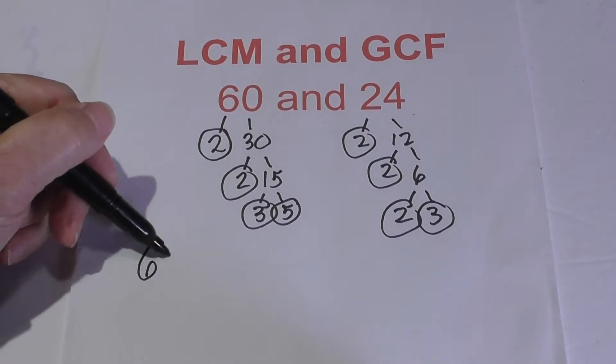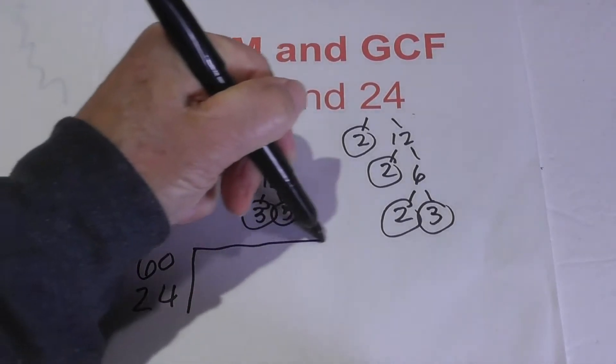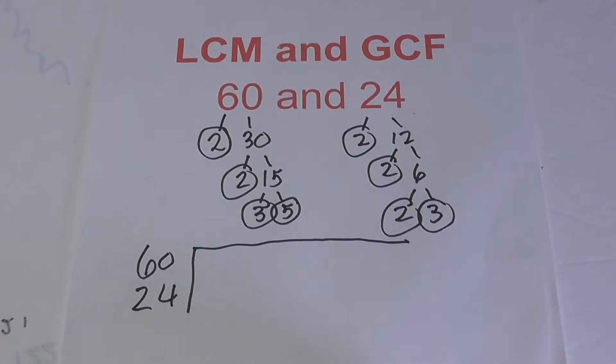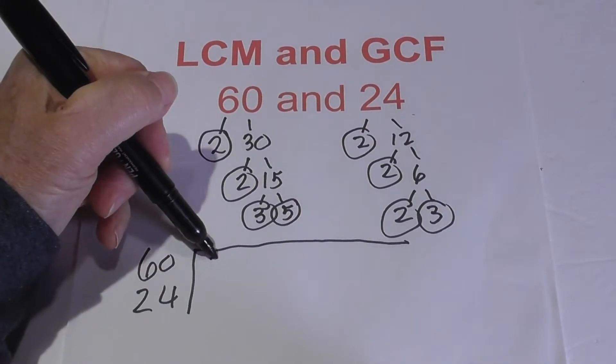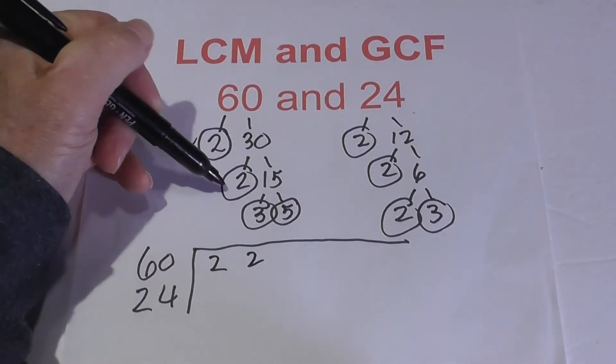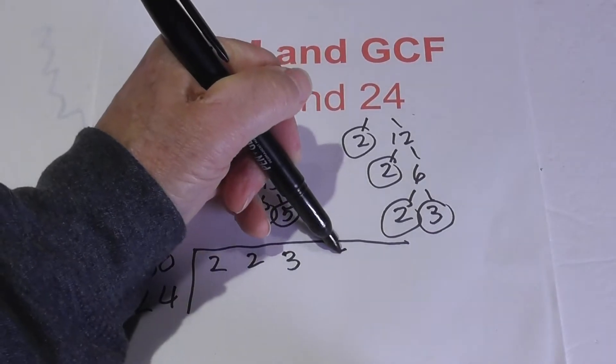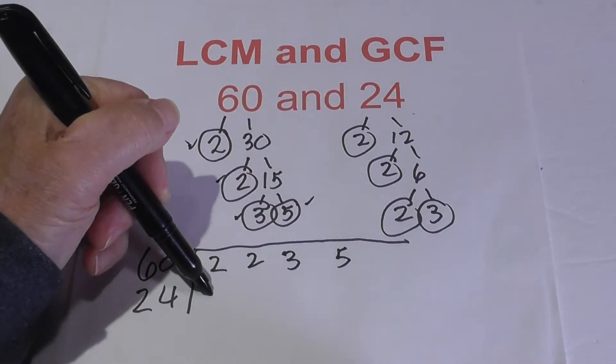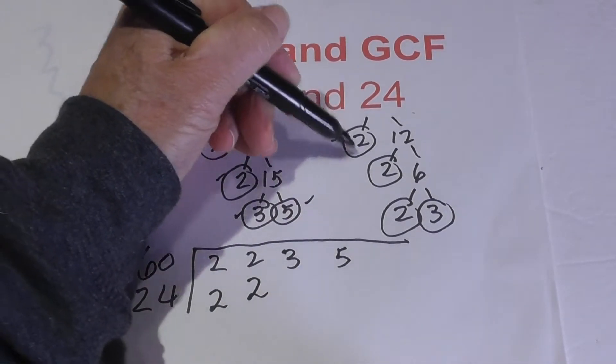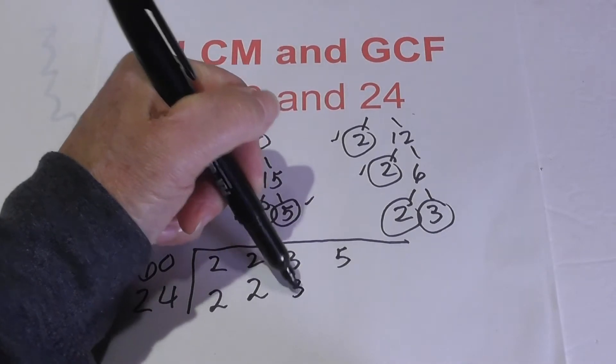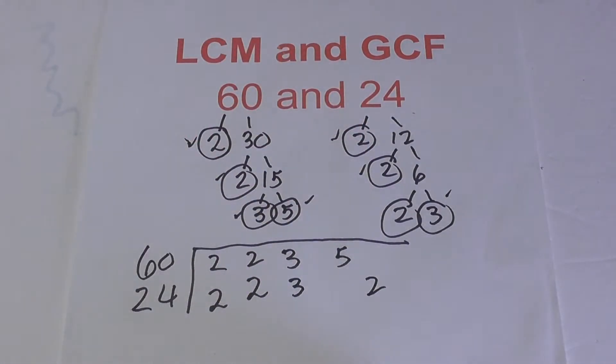I'll write all the prime numbers of both 60 and 24. For 60, I'll put a check by 2, 3, and then 5. For 24, I'm going to write the 2, write the 2, skip this 2, write the 3, and then write a 2 here.